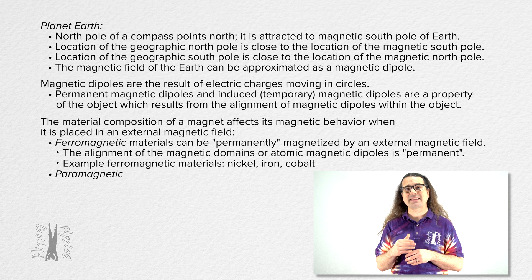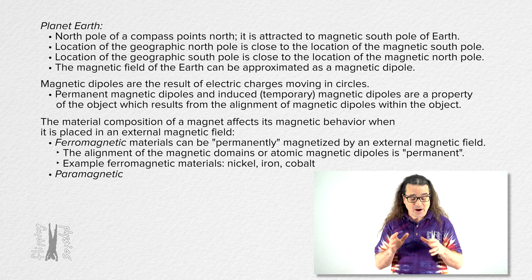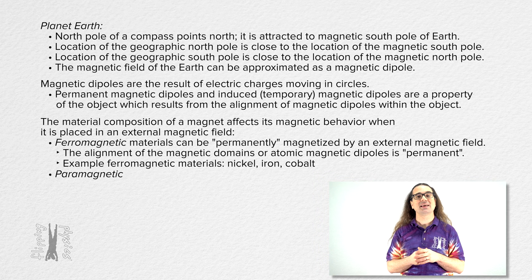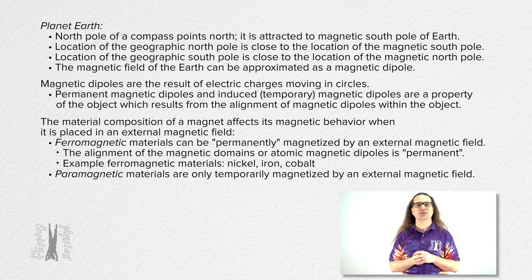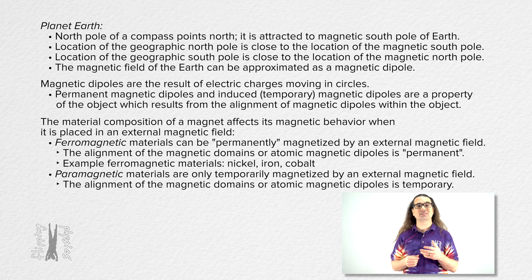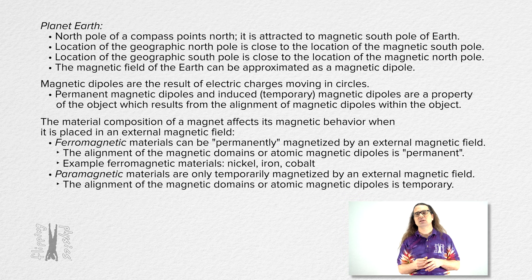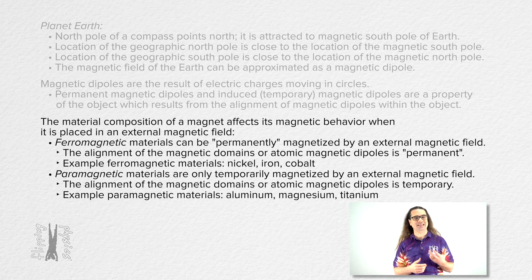Some examples of ferromagnetic materials are nickel, iron, and cobalt. Paramagnetic materials, on the other hand, can only be magnetized for a short amount of time by external magnetic fields and only interact weakly with those external magnetic fields. The alignment of the magnetic domains or atomic magnetic dipoles is temporary in paramagnetic materials. Some examples of paramagnetic materials are aluminum, magnesium, and titanium.